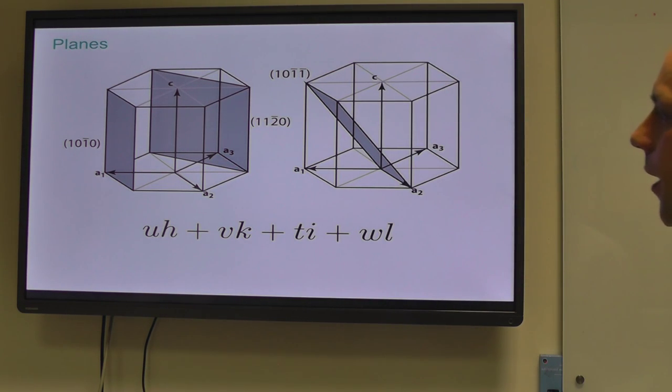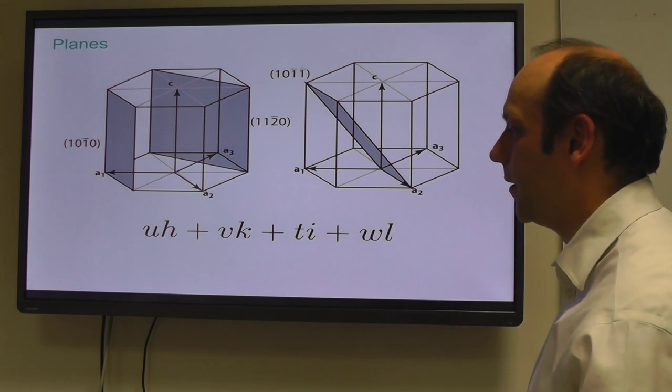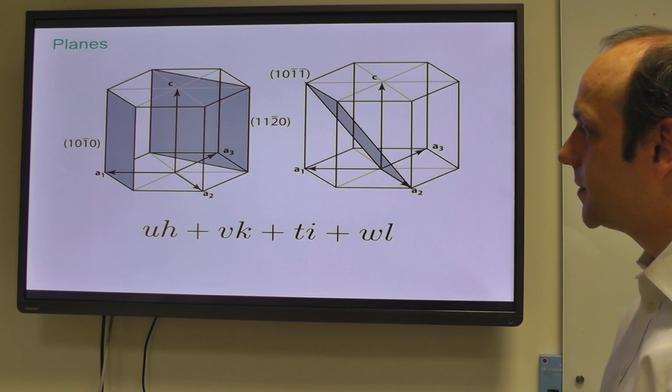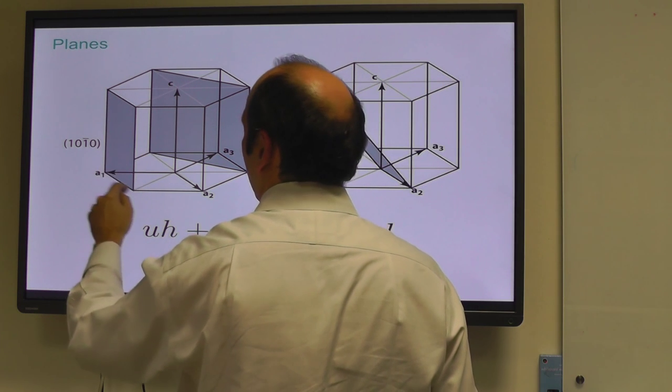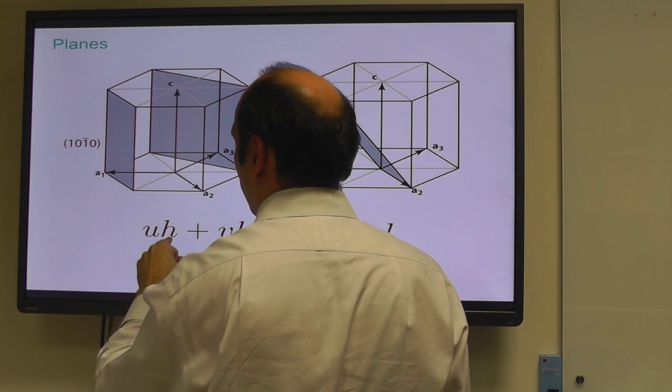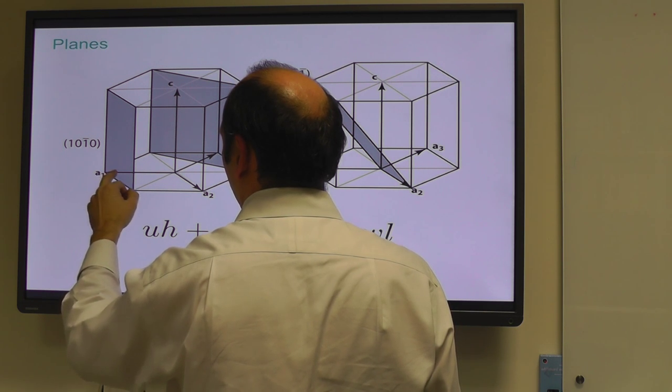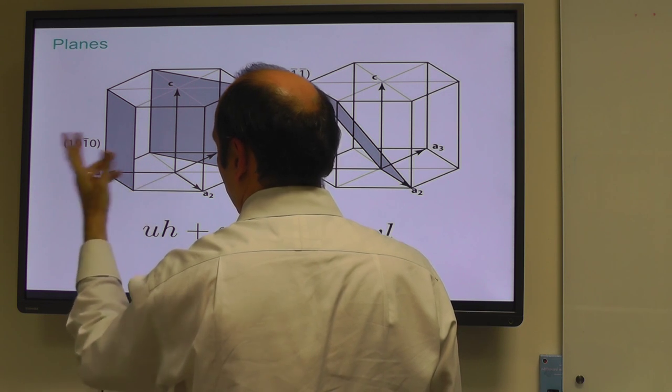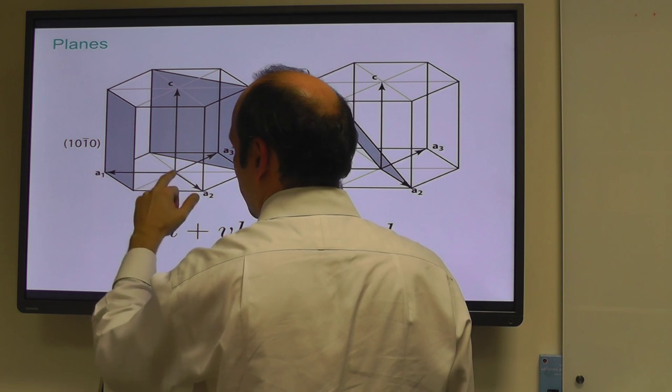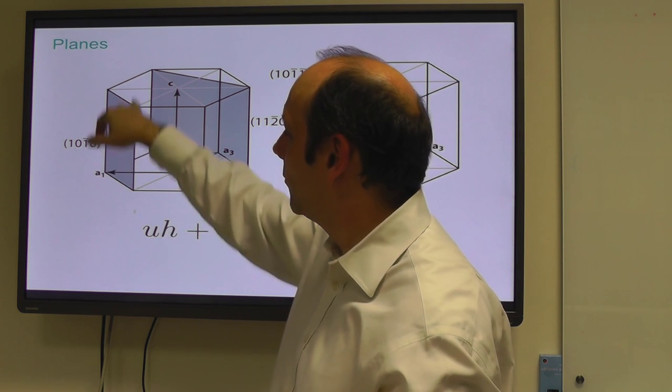Now for planes, you have a similar notation. If you have an HKIL plane, then I is equal to minus the sum of H and K, so H, K, and I have to sum to zero. You can sketch those out in the normal way. If you want the 10-10 plane here, it's 1 of those, bar 1 of A3s. That'll be the 10-10 plane, vertical in the C-axis. Similarly, the 11-20 plane, if you start from that corner, it's 1 A1, 1 A2 to the corners, or a half A3, which is bar 2. So that's a 11-20 plane.